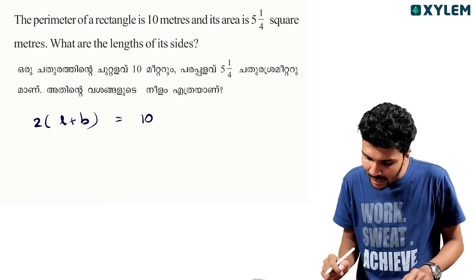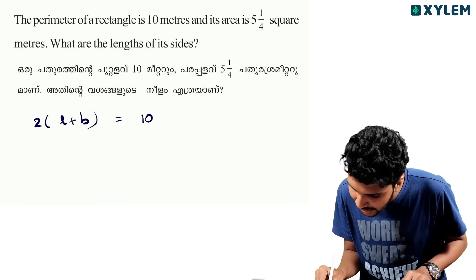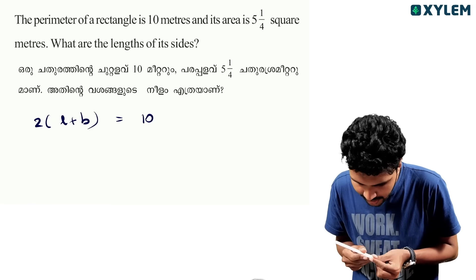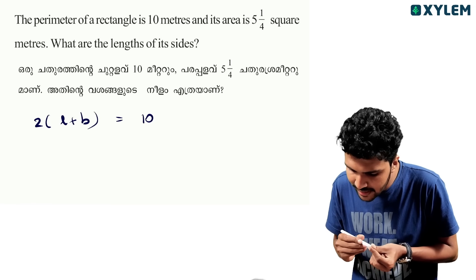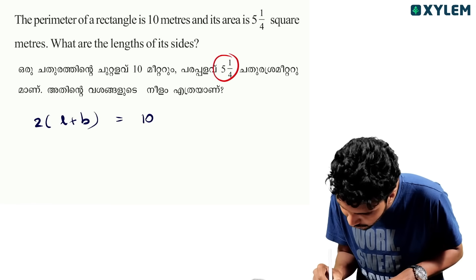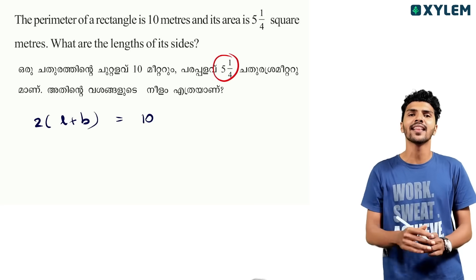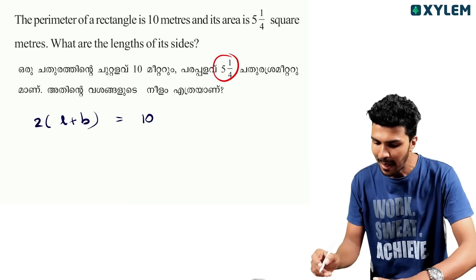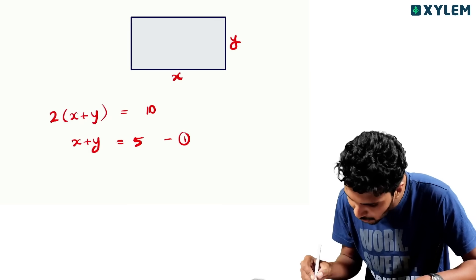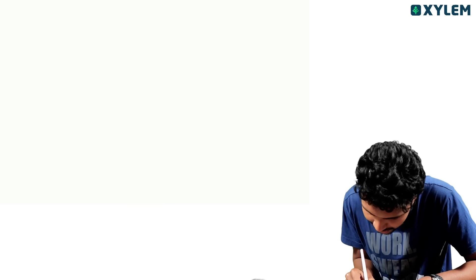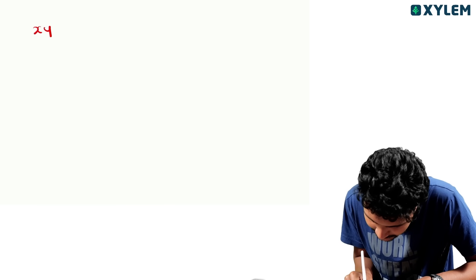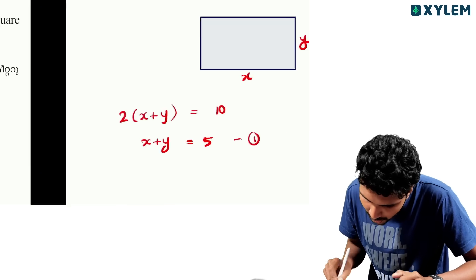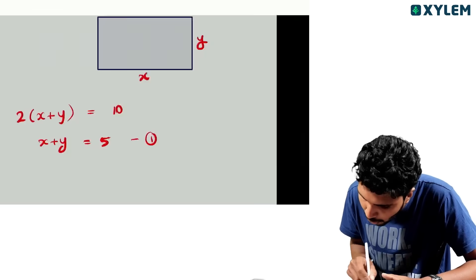Now the area is 5 and 1 by 4. You can see the area is length into breadth, which is x into y, equal to 5 and 1 by 4.